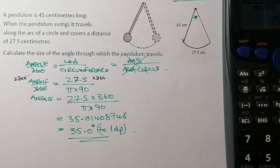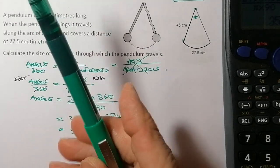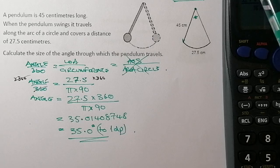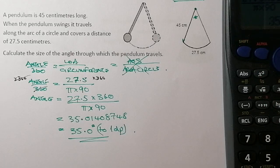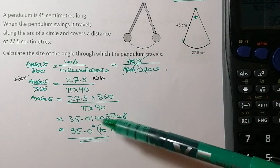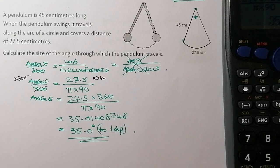That's all three questions on arcs and sectors. We've covered area of a sector, perimeter involving arc length, and a backwards calculation to find the angle. Hopefully this has helped you with your revision on arcs and sectors.